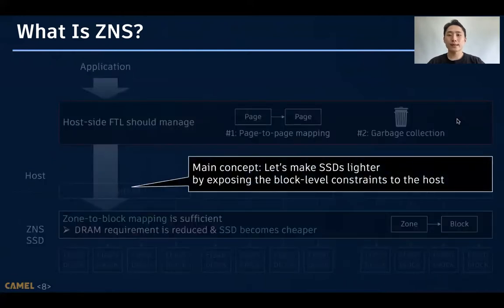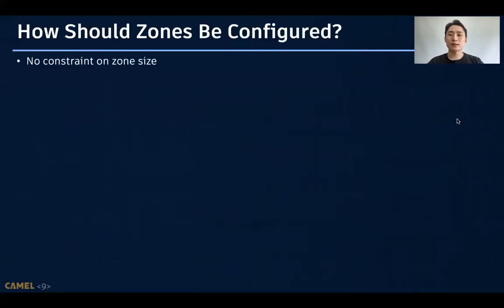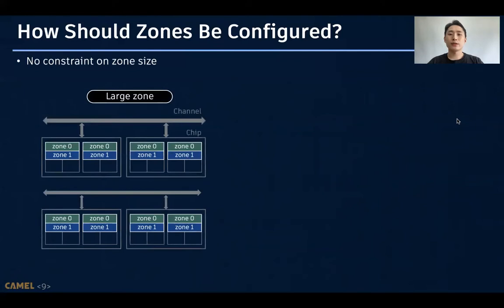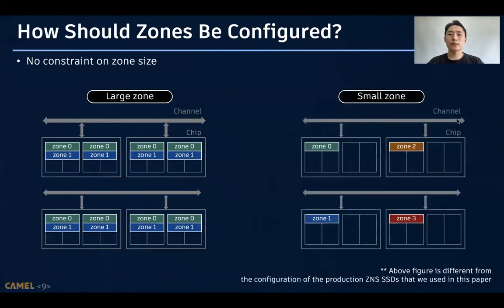Let's make SSDs lighter by exposing the block-level constraints to the host. And note that there is no constraint on the size of zones, and it is up to the decision of vendors. So, there can be a device which translates a large zone to many flash blocks, spanning across multiple chips and channels. On the other hand, there can be a device which utilizes small zones which are mapped to one or more flash blocks on a single chip.